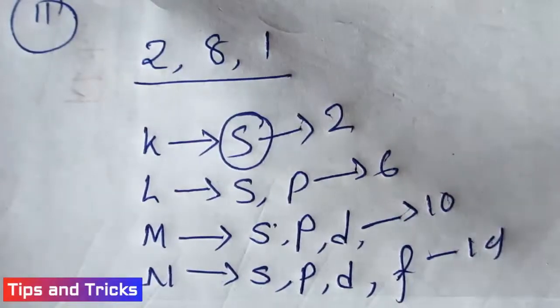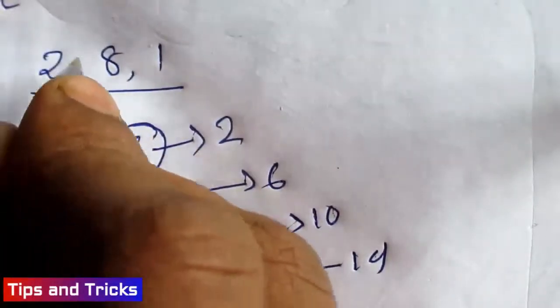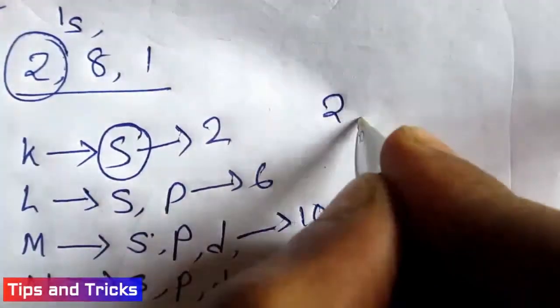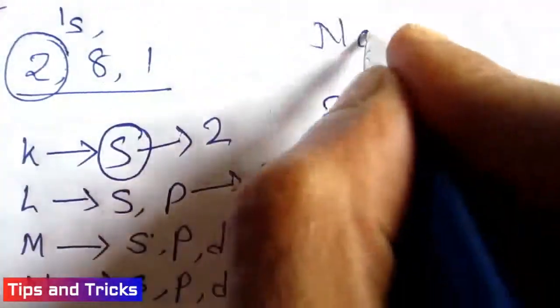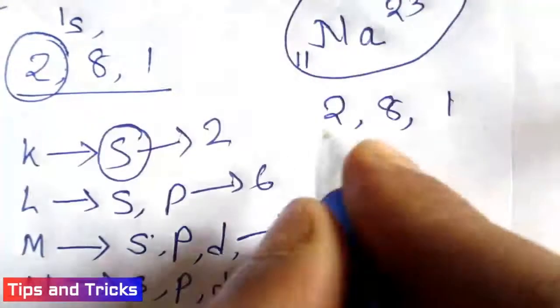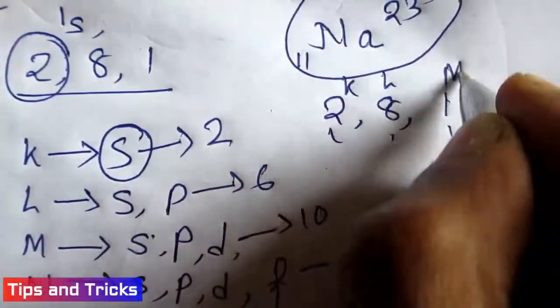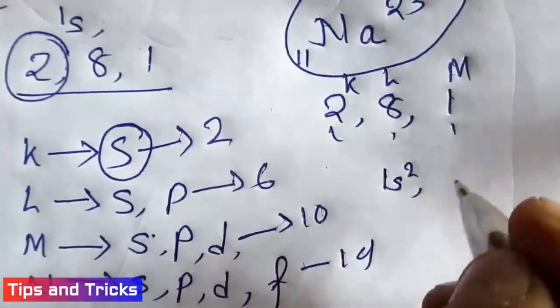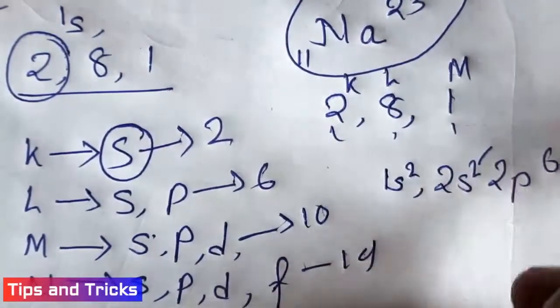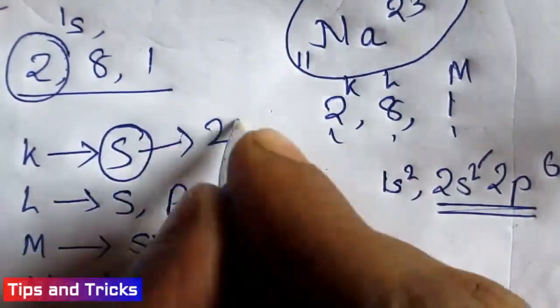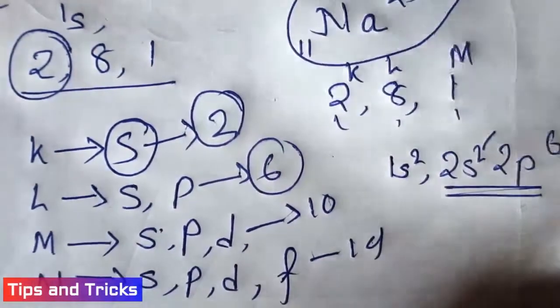Now 2 can be written as 1s². 8 can be written as 2s² 2p⁶. And this 2s² and 2p⁶ is 2 plus 6, which equals 8.